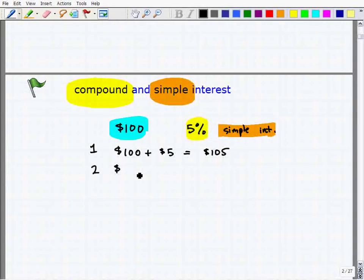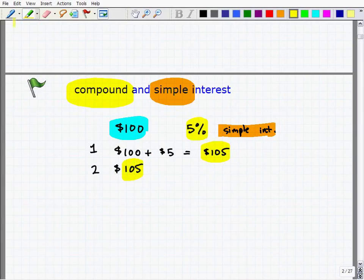Your second year, now here's how simple interest works. Simple interest says, we're going to give you your current account balance, which is your $105, plus we'll give you another 5% on your initial deposit, your principal amount. So you get $105 plus another $5. This is the difference between simple and compound interest. I'm going to show you in just a second. So your total amount after year two is $110.